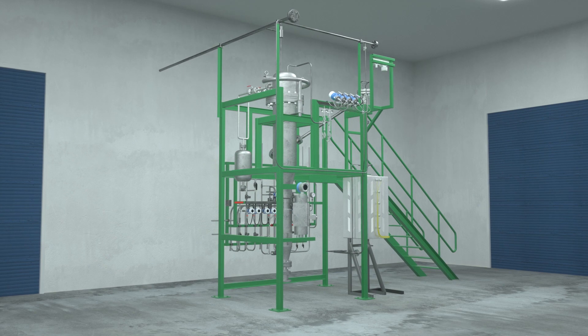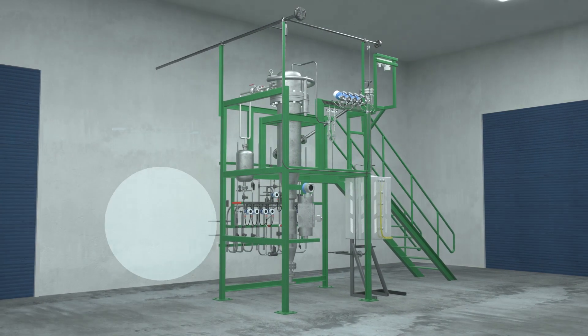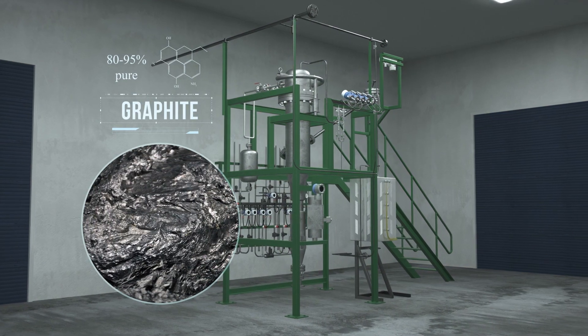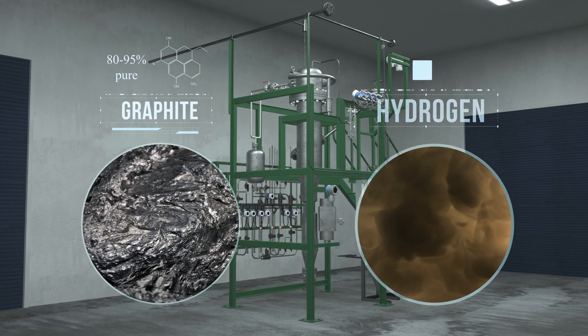The Hazer process has now created two new products, a raw 80-95% purity graphite product and hydrogen.